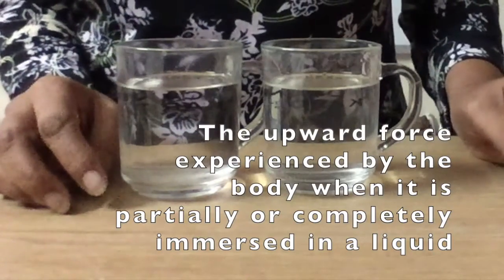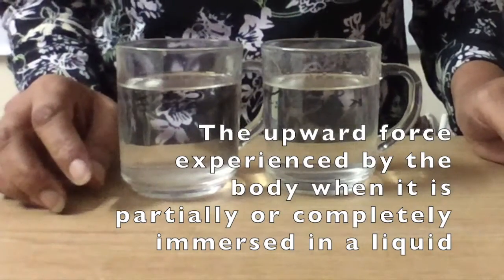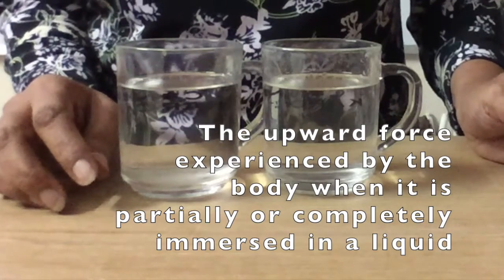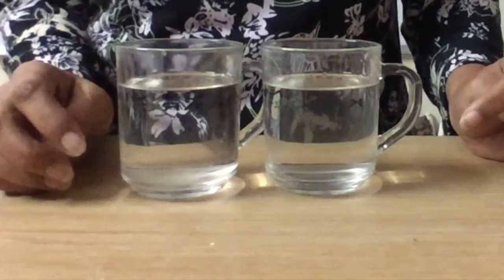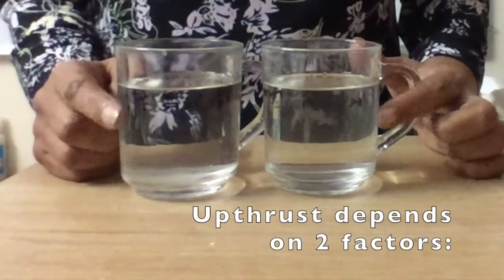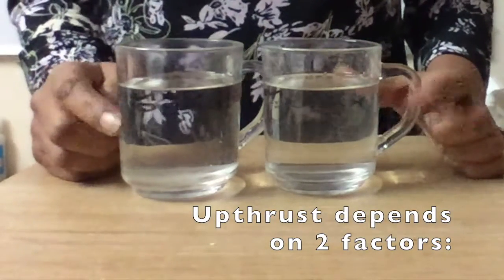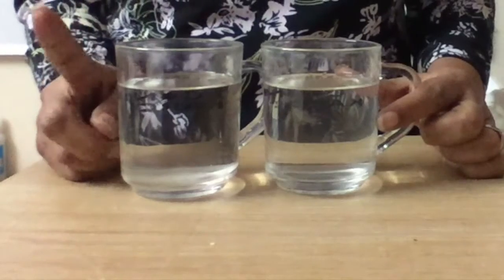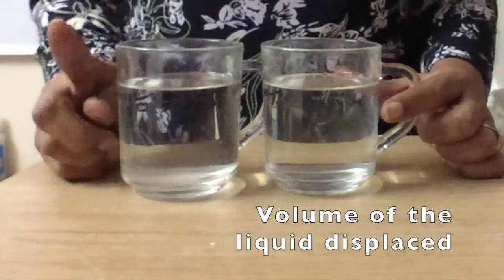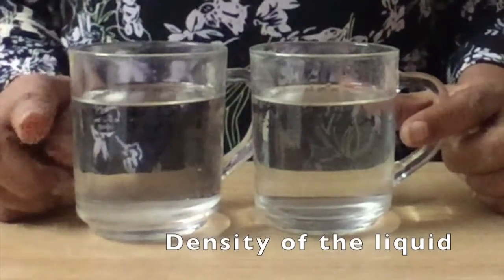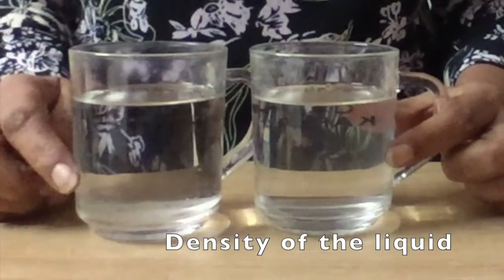Upthrust is the upward force experienced by the body when it is partially or completely immersed in a liquid. Now upthrust depends upon two factors. Which are the two factors? Number one, it depends upon the volume of the liquid displaced. Number two, it depends upon the density of the liquid.